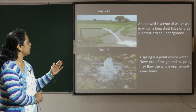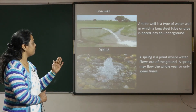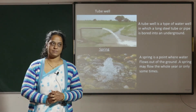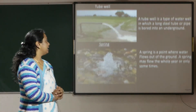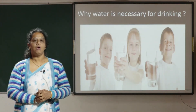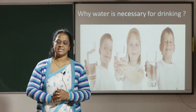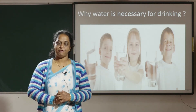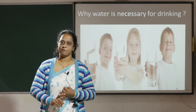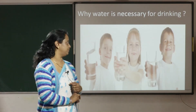A spring is a point where water flows out of the ground. A spring may flow the whole year or only for some time. Water is necessary for drinking because it helps to maintain the body fluid, and this fluid includes digestion, absorption, and circulation for the maintenance of body temperature.